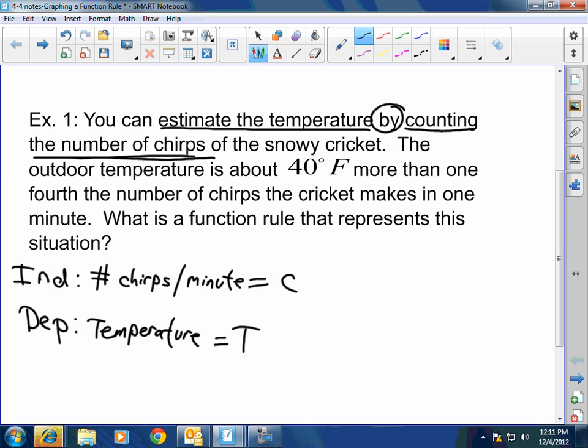Now that we have the independent and the dependent, it makes things a lot easier. Because now the dependent variable T, the temperature, the temperature is, what does is mean? About 40 more than? 40 plus. Good job. One fourth the number of chirps per minute. One fourth C. Fantastic. Great job, guys. Absolutely fantastic.